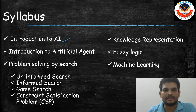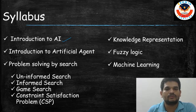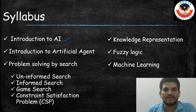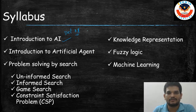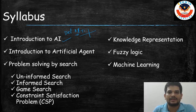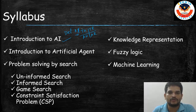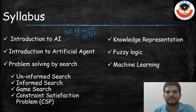In Introduction to AI, we are going to look at the definition of AI. Here we have four categories of Artificial Intelligence: thinking humanly, acting humanly, thinking rationally, and acting rationally. We are going to look at all these four categories in detail with real-time examples, in simple words.